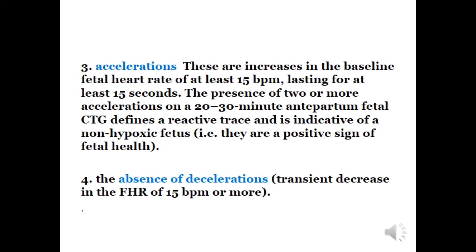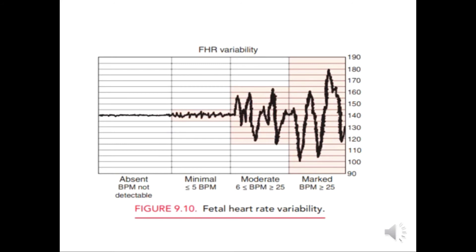Feature 4: The absence of decelerations — a deceleration is a transient decrease in the fetal heart rate of 15 beats per minute or more. As shown in the diagram, variability categories include: absent, minimal (less than 5 beats), moderate or normal (5–25 beats), and marked (more than 25 beats per minute).